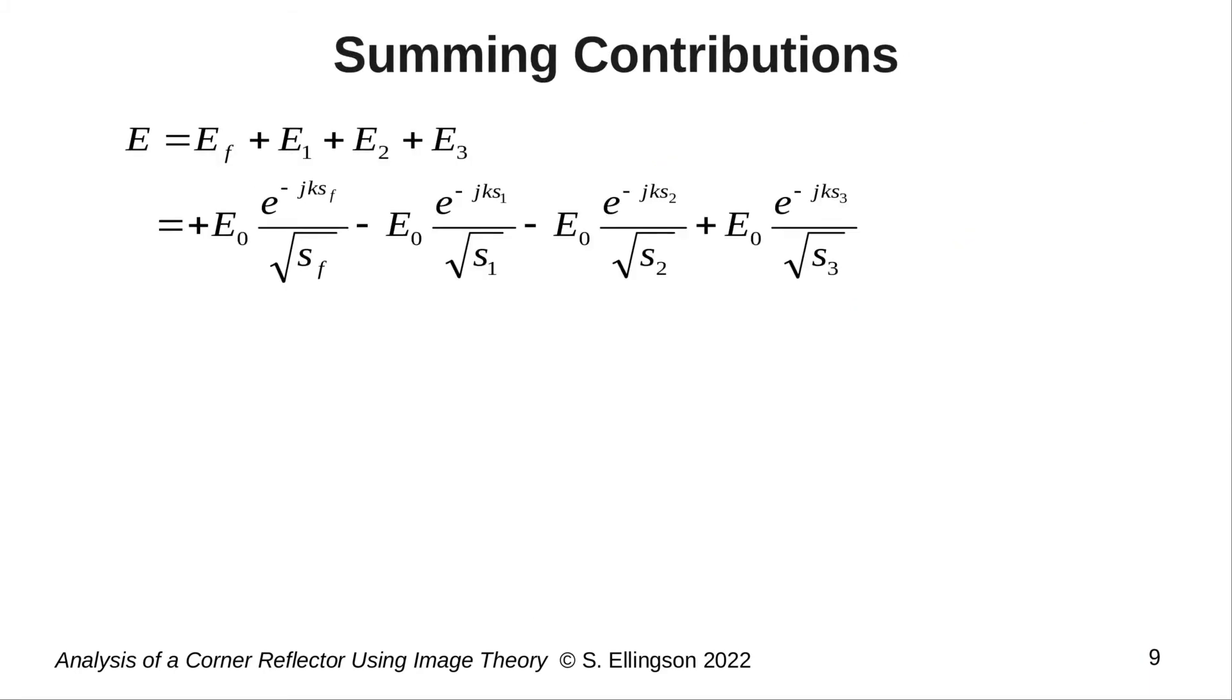To get the total field, we'll simply add these contributions. Since they are all either plus or minus z-hat polarized, we can do this as a scalar operation, as shown here, and again, yay for two-dimensional analysis. Making the substitutions, we obtain the scalar expression shown here.